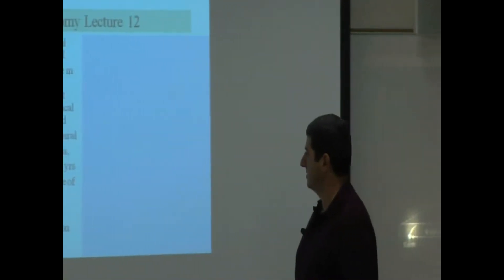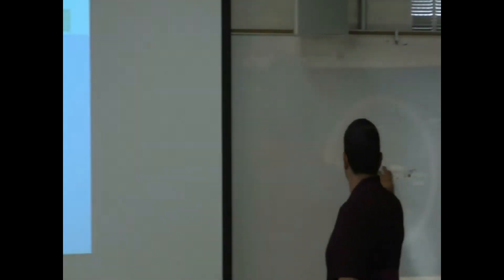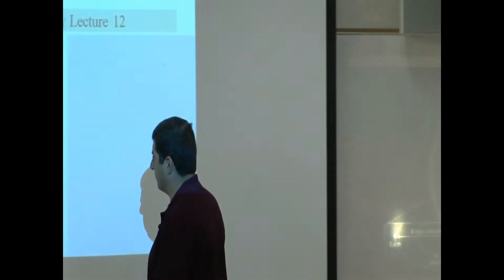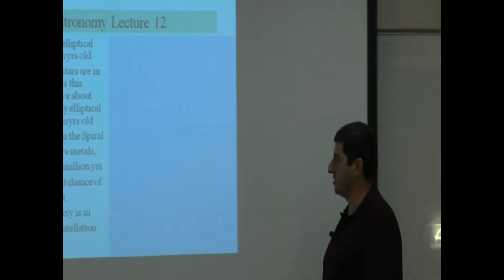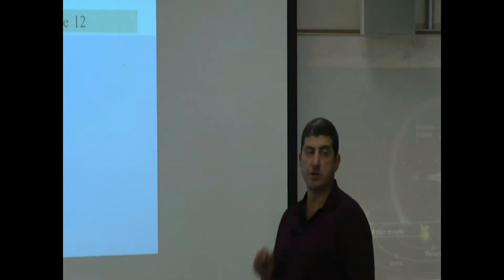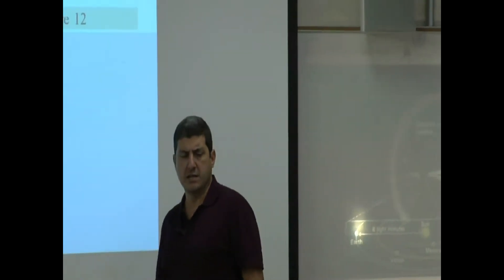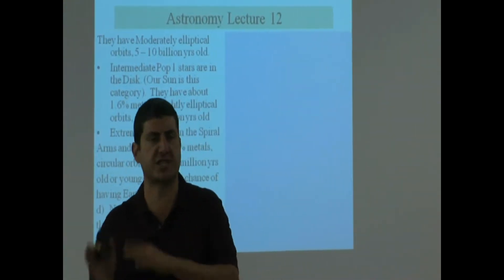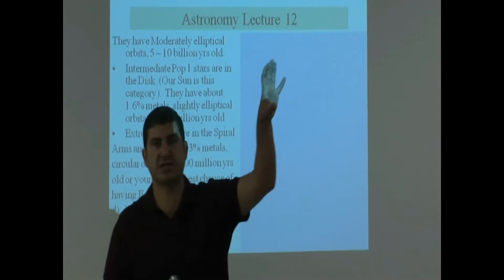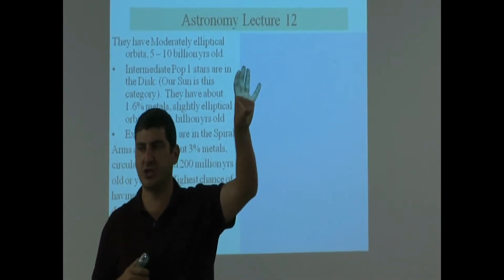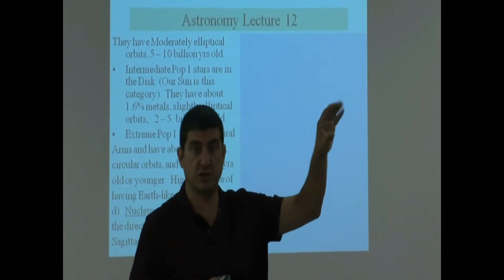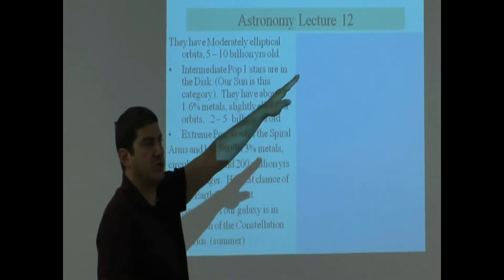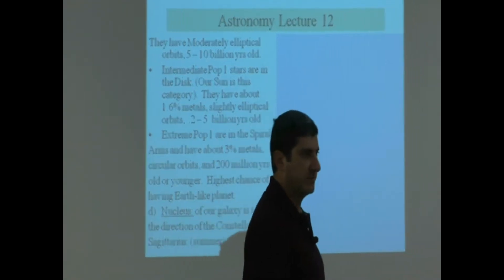Going back to the nucleus, we focus on the nucleus and the black hole that it contains. The nucleus of our galaxy is in the direction of the constellation Sagittarius. If you want to be able to see the nucleus of the galaxy, wait for summer months and look up in the sky towards the constellation Sagittarius, which is a summer constellation, and just keep looking towards that direction. That's going to be in the direction of the center of the galaxy.